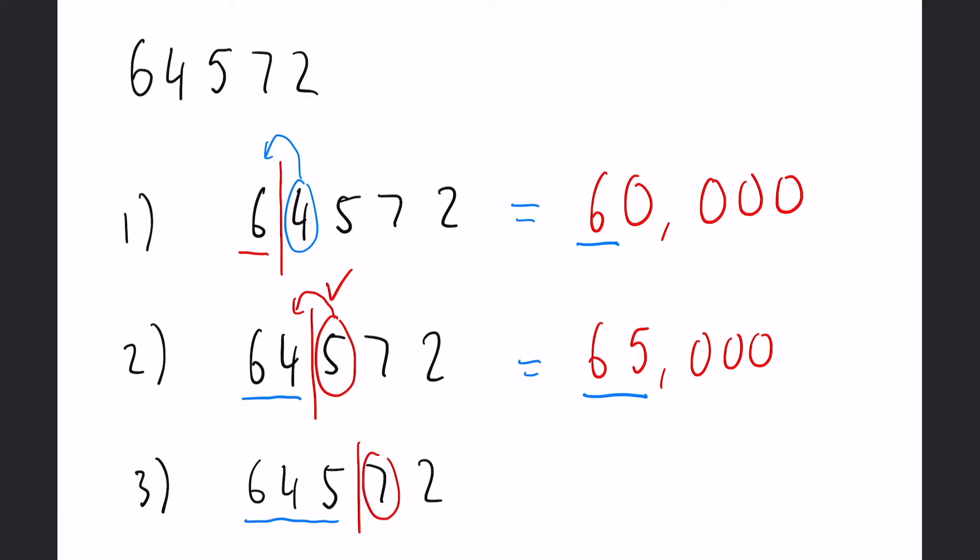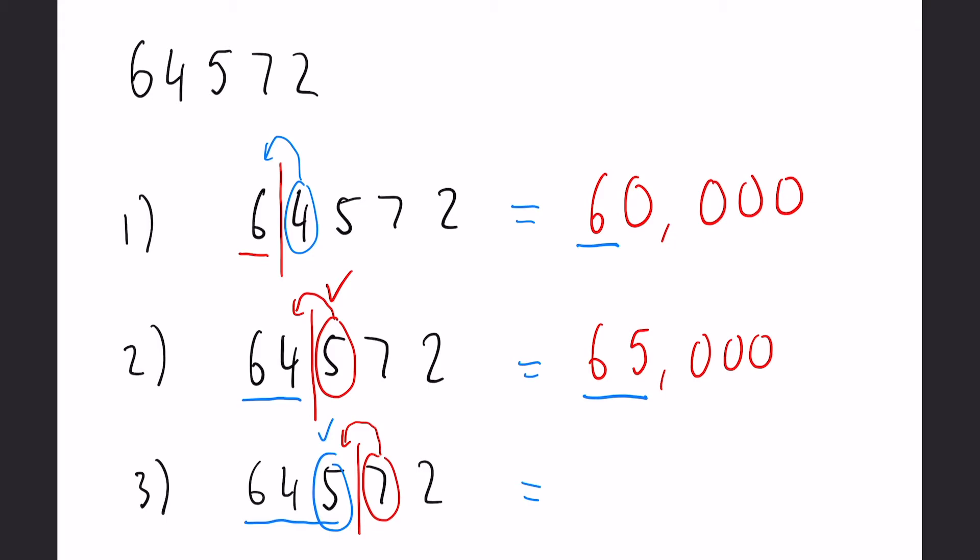Then we have a seven here, so that means it is closer to 64,600 than it is to 500. So that five that we have before the line will round up to a six, so we have 64,600 this time. And again you can see we have three significant figures.